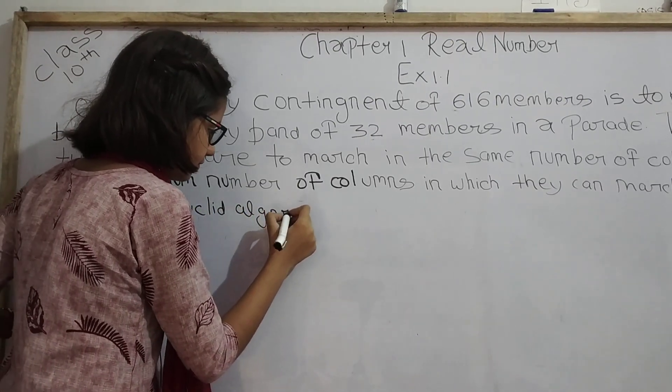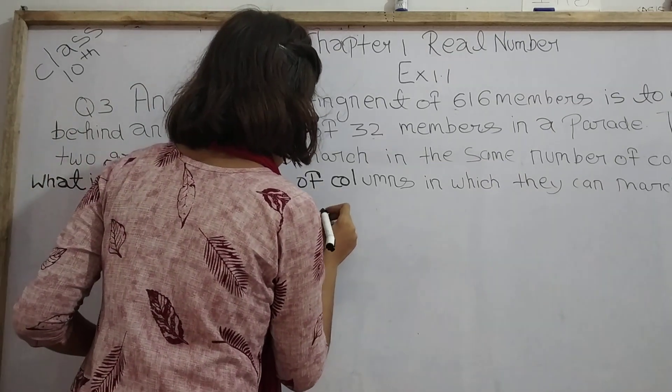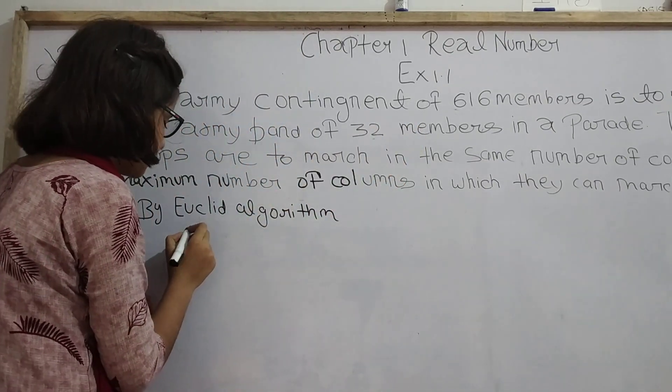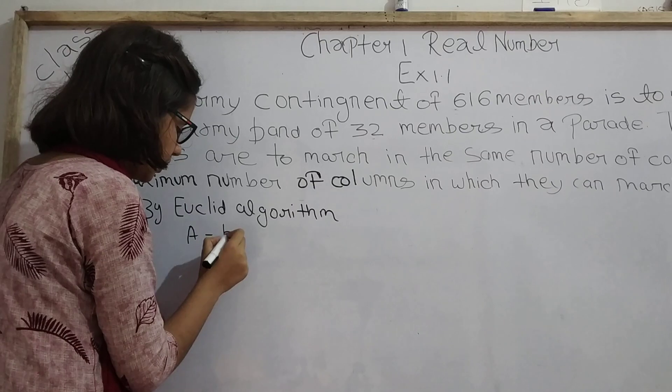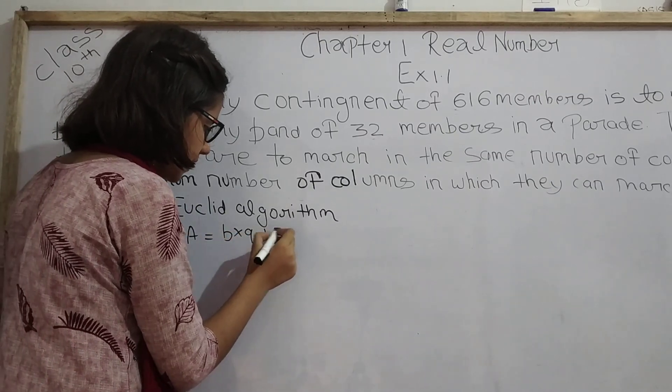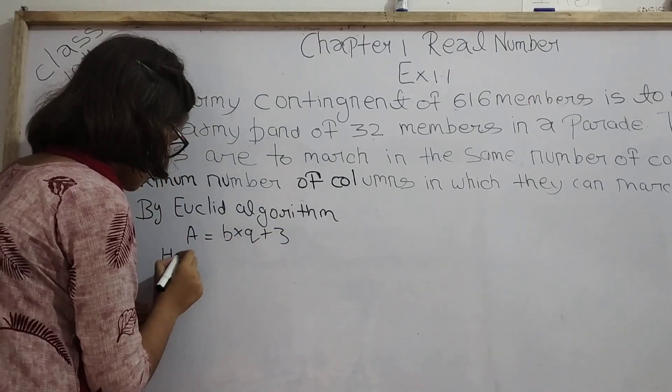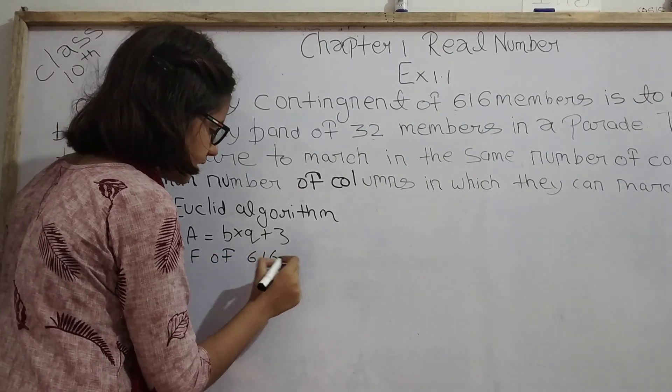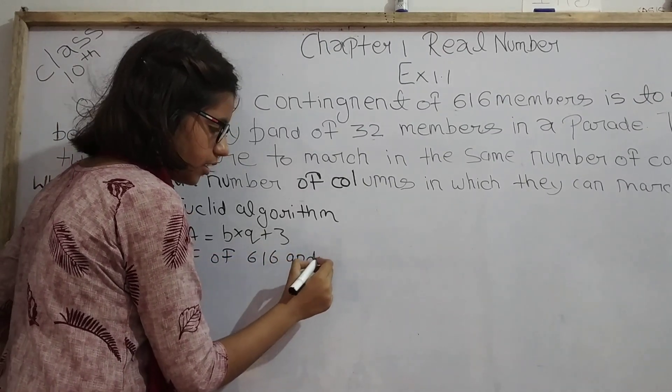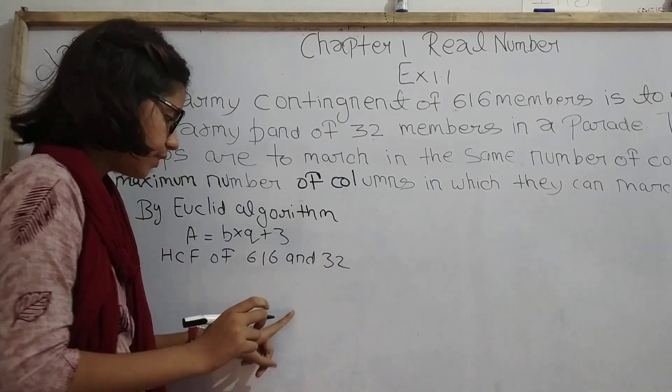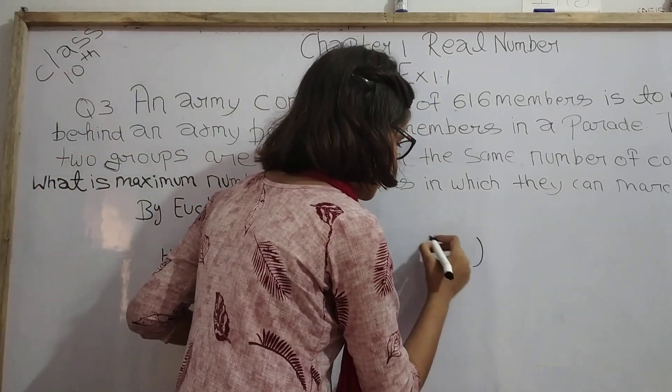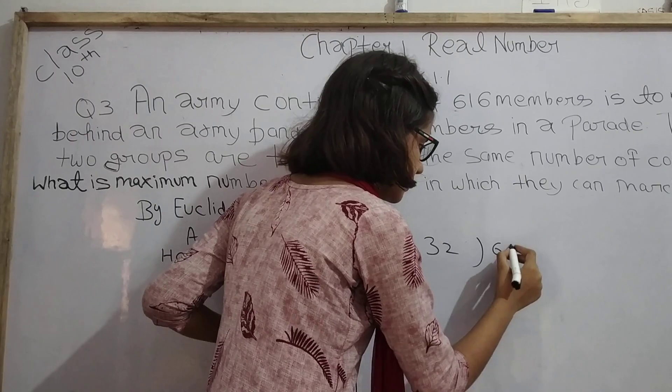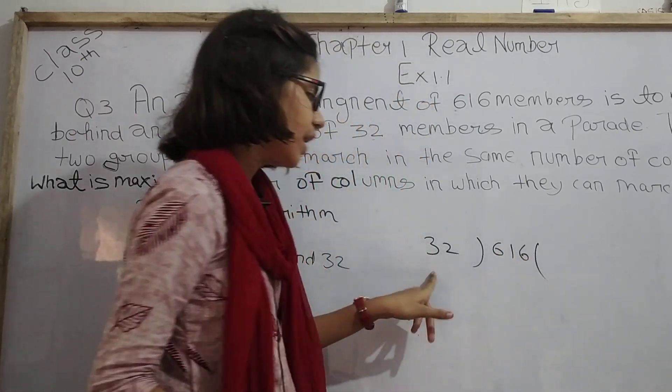By Euclid's algorithm, we'll find the HCF of these numbers, which means a equals b into q plus r. So for HCF of 616 and 32, we divide 616 by 32. Dividing once gives us 32, leaving 9 here, 2 here, and 6 here.